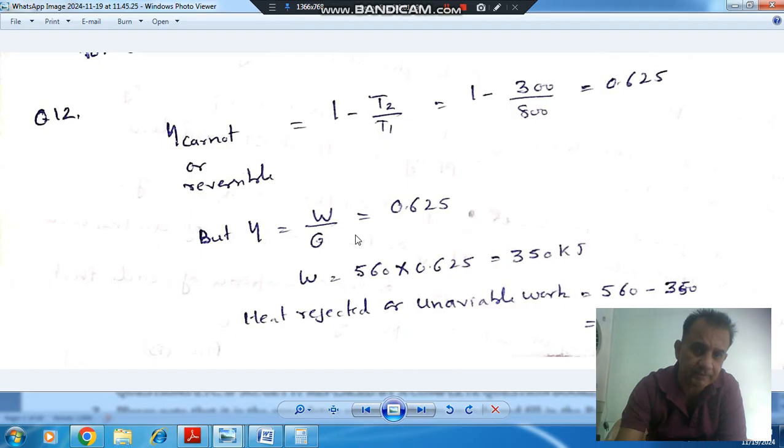And in general, efficiency is work done by heat supplied. As heat supplied is 560 kJ, so work done is 350 kJ. So now, this is the work done and this is the 560, the heat supplied.